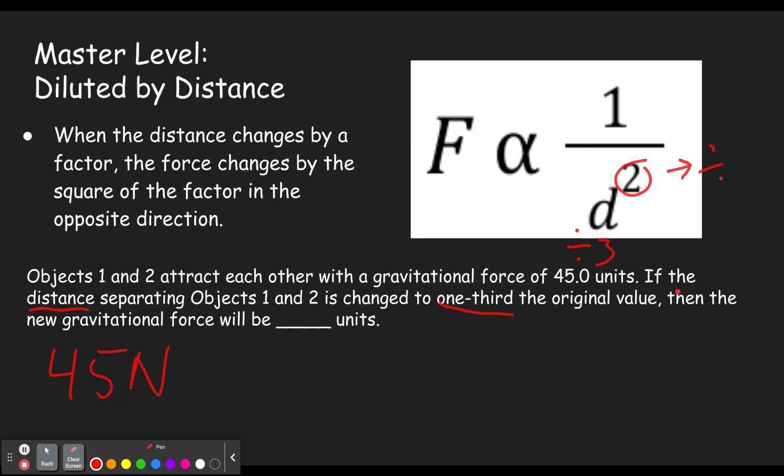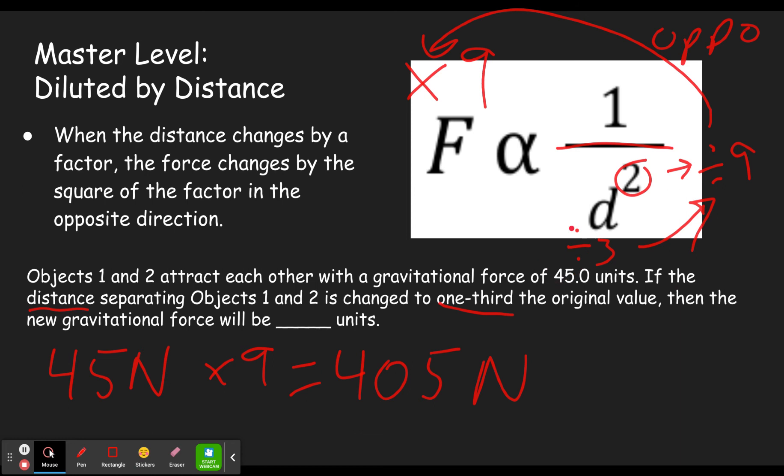Okay, so down here we changed by one third, that's dividing by three. But when we square that, that's like dividing by nine. And if we divide by nine, if we divide the denominator by nine, or the inverse part of this, that means we're going to have to multiply the force times nine, which gives us four hundred and five newtons. All right, so just make sure that you don't forget to square the factor and then don't forget to flip it to the opposite. Instead of dividing we multiplied. If you were multiplying down here then make sure you divide up there.